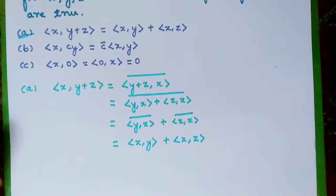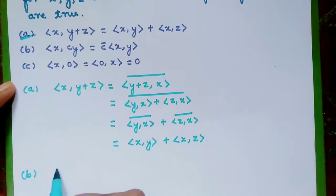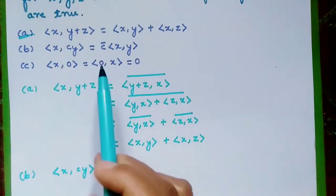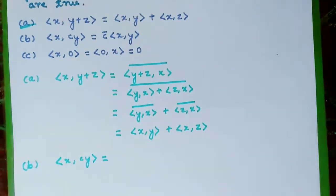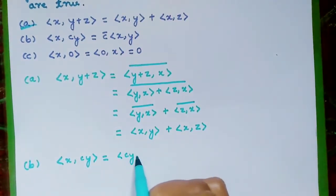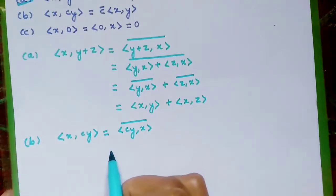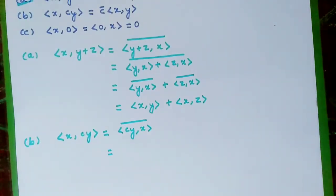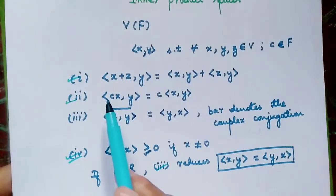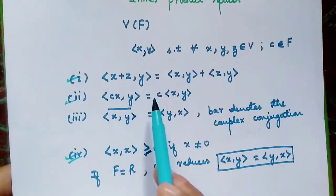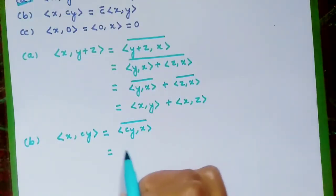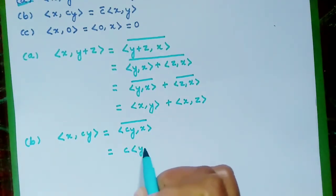Now let us prove the second one. We have to show that ⟨x, cy⟩ = c̄⟨x,y⟩. We can write this as the complex conjugation of ⟨cy, x⟩ by applying the conjugate symmetry property, since v is an inner product space. Applying the second axiom, ⟨cy, x⟩ = c⟨y,x⟩, so we have c⟨y,x⟩.